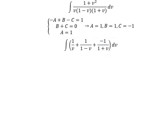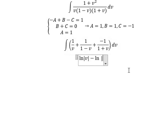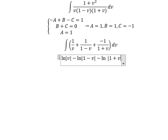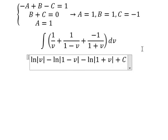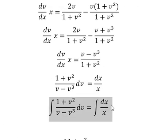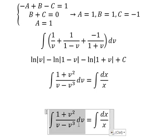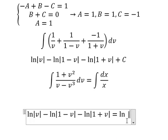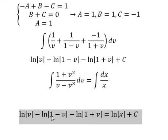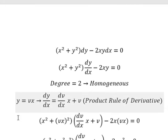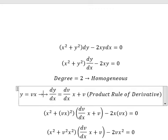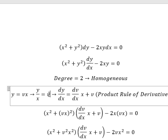Now we have the final integration. The integral of 1 over v gives ln of the absolute value of v. The integral of the second term gives negative ln of the absolute value of 1 minus v. The integral of the third term gives ln of the absolute value of 1 plus v. We put the constant C here. The integral of the right side gives ln of the absolute value of x plus C. Now v equals y over x, so we divide both sides by x and then change v into y over x.